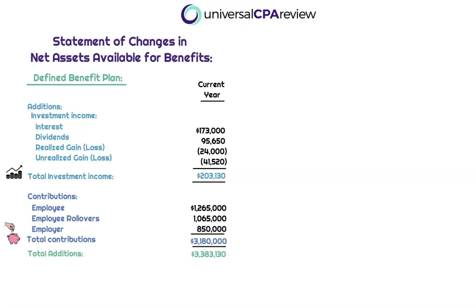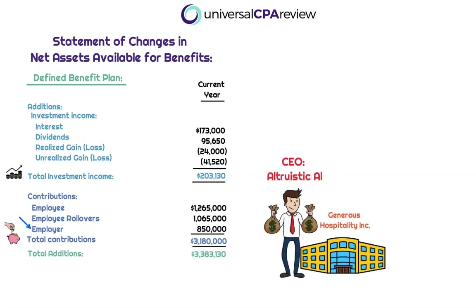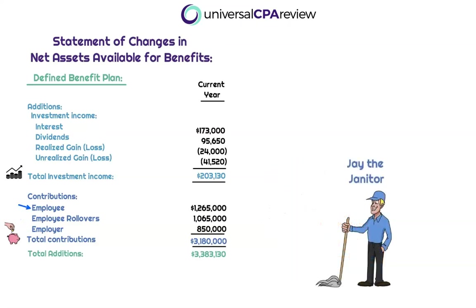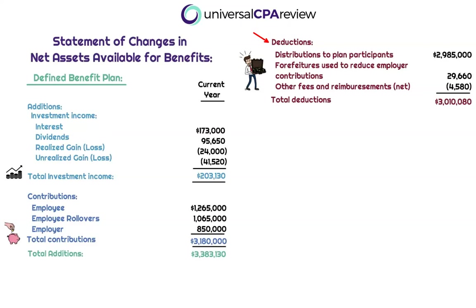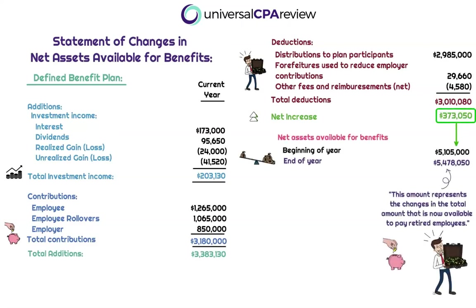Additions also include contributions made to the plan. If Altruistic Al and Generous Hospitality contributed to the plan, that's an increase to total assets available — the whole point of the contribution is to eventually distribute it. Same goes for employee contributions: if Jay the janitor withholds a portion of his paycheck and puts it in the investment account, that's a contribution and an increase to the amount available for future distributions. The balance is reduced by deductions — maybe a distribution was made, which means less money available for future distributions. Total additions less total deductions result in either a net increase or net decrease to plan assets available. The ending balance is the new amount available for future distributions.